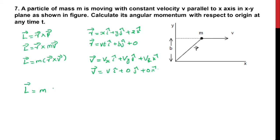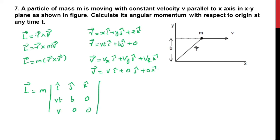So we write L vector equals m times the determinant form for the vector cross product. The first row is î, ĵ, k̂. The second row (position vector) is vt, b, 0 along x, y, z respectively. The third row (velocity vector) is v, 0, 0 since velocity acts only along the x-axis.